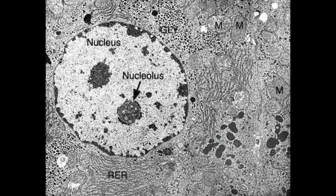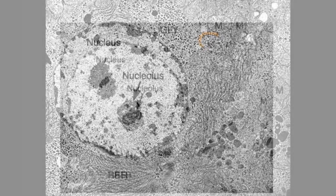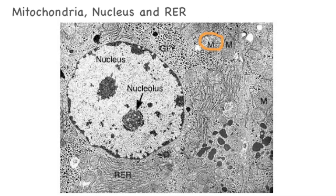This next image serves to show us the relative sizes of the nucleus compared to the mitochondria, labelled M, and the rough endoplasmic reticulum, RER. You can see how much bigger the nucleus is than the latter two.